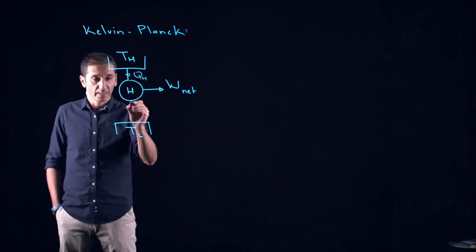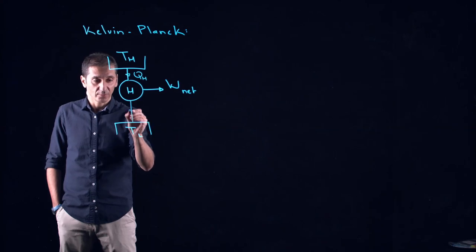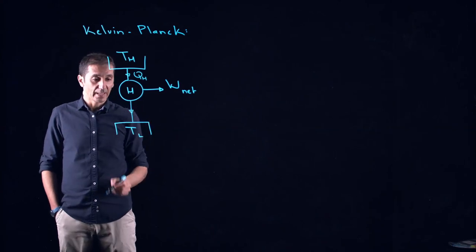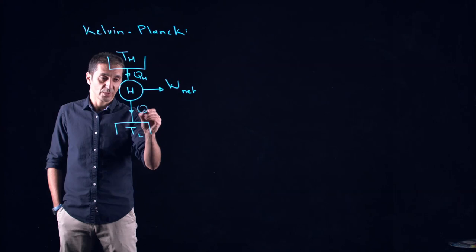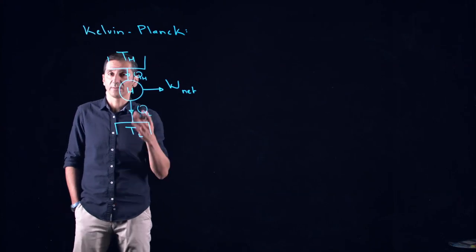So we said that we have to pay a price, a tax to this universe, and the tax is to reject a certain amount of heat, QL.